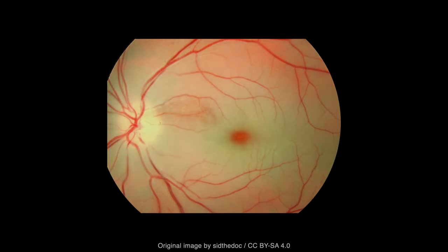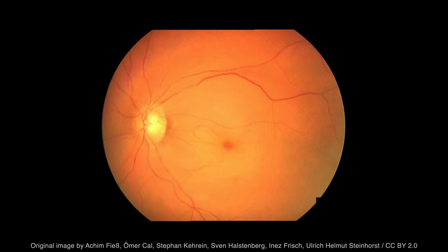The classic fundoscopic appearance of central retinal artery occlusion is a pale retina with a cherry red spot. This appearance, however, may not become evident for several hours. Other findings may include retinal artery attenuation and segmentation, retinal emboli, which are whitish, and plaques, which are more yellowish, and optic disc edema or atrophy, depending on when the examination is performed.